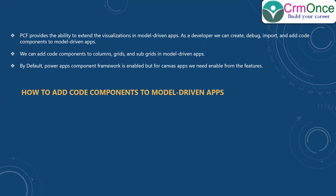We can add different types of controls — whatever visualizations we can build and deploy, or some controls will come out of the box. The Power Apps component framework for model driven apps is enabled by default. Whereas for canvas apps, if you want to add any PCF controls, you have to enable that feature in the list of features from the settings.